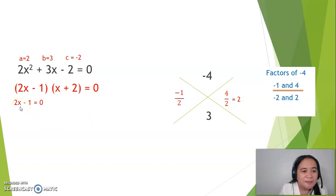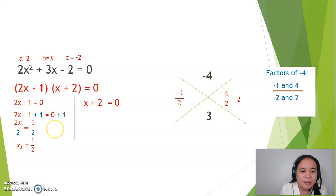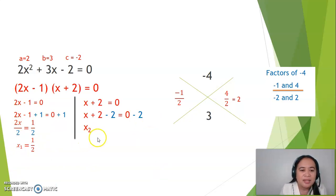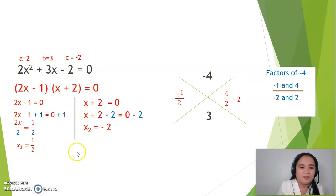Solving: eliminate the 2 from 2x minus 1 by subtracting — so the first value for x will be 1 half. For the other side, x plus 2 equals 0 — subtract 2 from both sides, so the second value for x will be 0 minus 2, or negative 2. Therefore, the roots for 2x squared plus 3x minus 2 equals 0 are 1 half and negative 2.